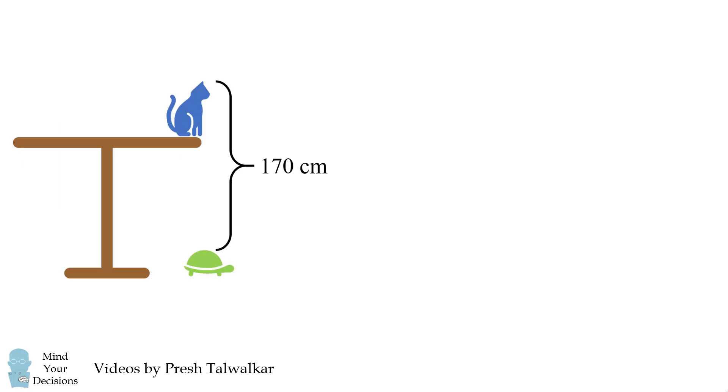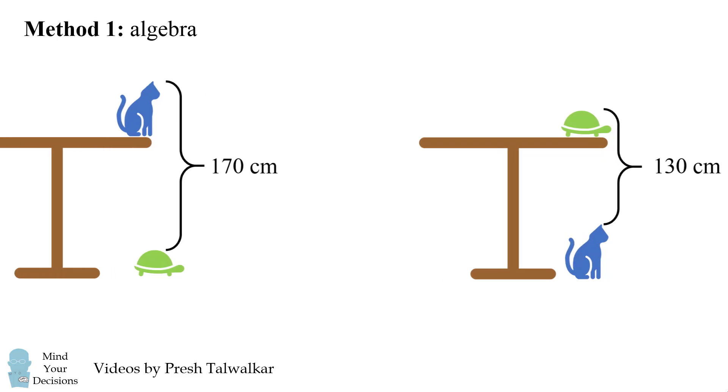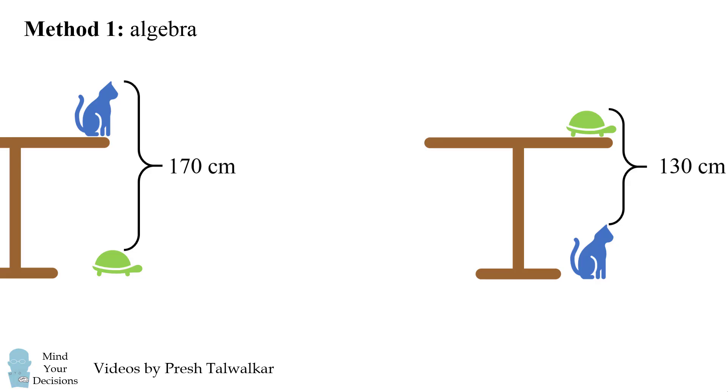So, one way to solve this problem is to use algebra. The first picture we can translate into the following equation. We have the height of the cat plus the height of the table minus the height of the turtle is equal to 170.